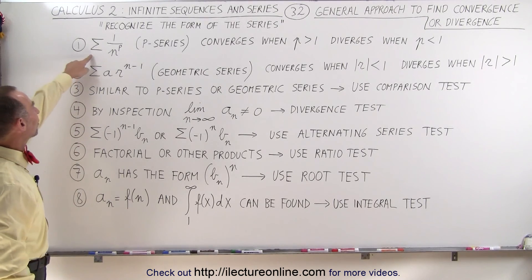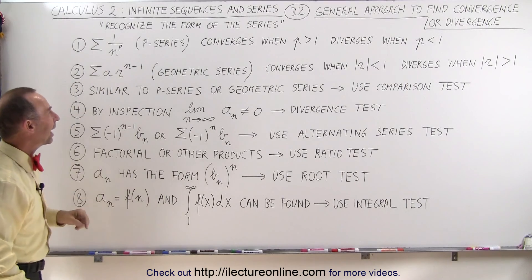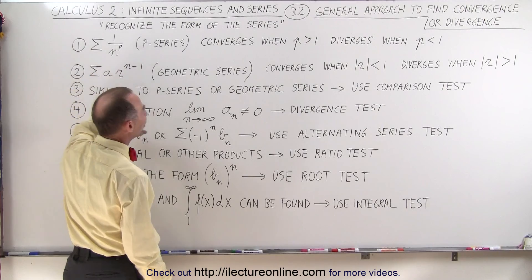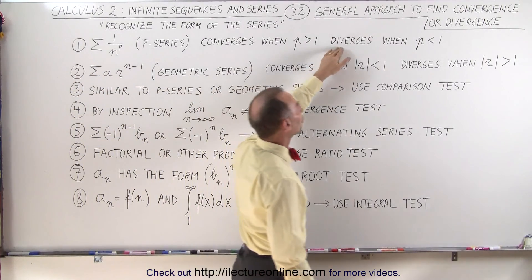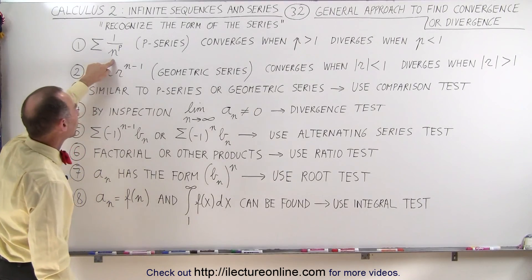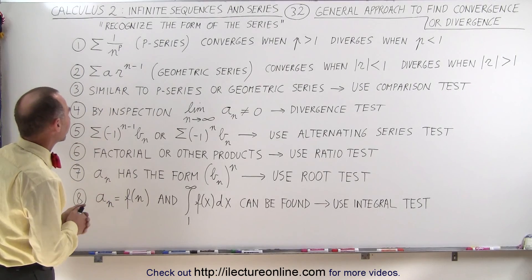So we could have a series that looks like 1 over n to the p power. It's called the p-series and it will converge when p is greater than 1 because then the denominators get small very quickly, or they will diverge when p is smaller than 1 because then actually the denominator will get smaller and smaller so the elements or the terms will become bigger and bigger.